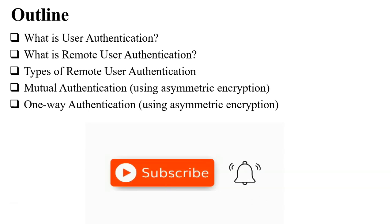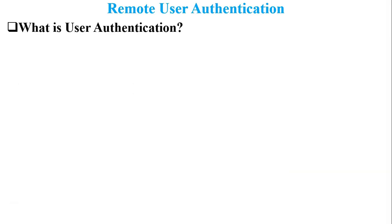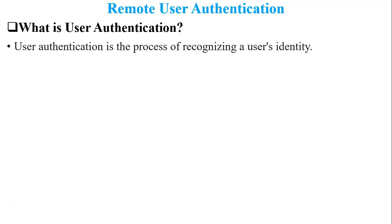User authentication is a process to recognize a user's identity. For example, you are out of town and your friend comes to your home, but your parents cannot recognize your friend, so they will not allow your friend to enter. Because your friend is unauthenticated to your parents — that is called user authentication.